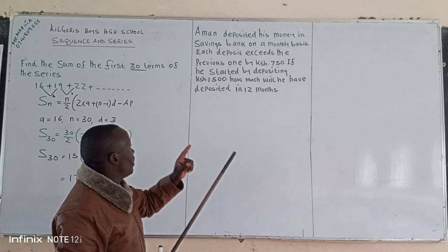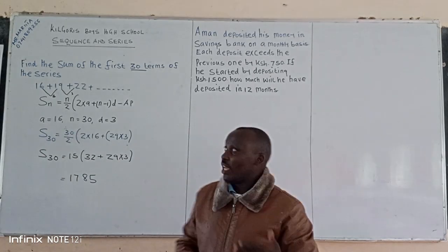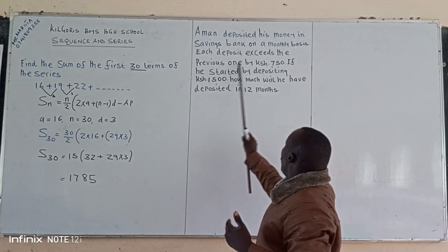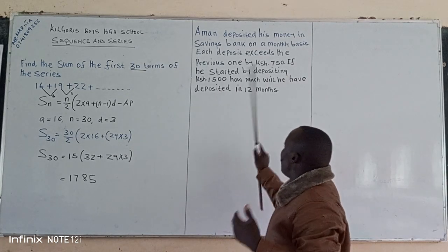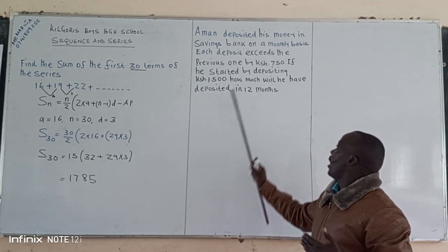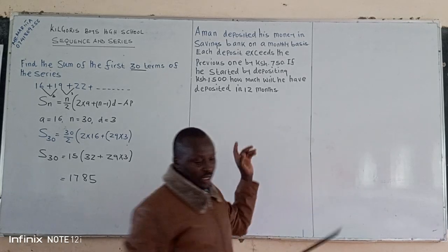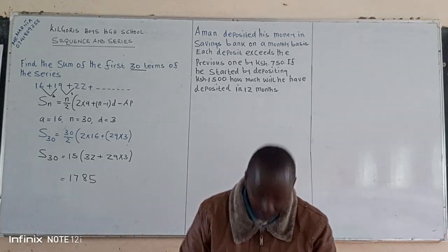...exceeds the previous one by 750. So if he started by depositing Kenya shillings 1500, how much will he have deposited in the 12 months?